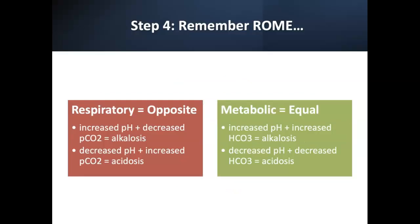Step four: remember ROAM — Respiratory Opposite, Metabolic Equal. For respiratory: if you have an increased pH (alkalosis), your PCO2 is going to be decreased — they are opposite. If you have a decreased pH (acidosis), you're going to have an increased PCO2. For metabolic: if you have an increased pH, you're going to have an increased bicarb — alkalosis. If you have a decreased pH, you have a decreased bicarb — acidosis. So metabolic is equal. ROAM is very important to remember.